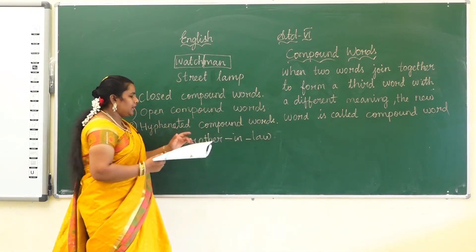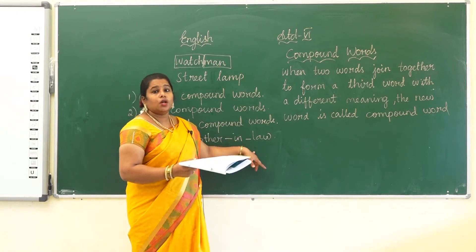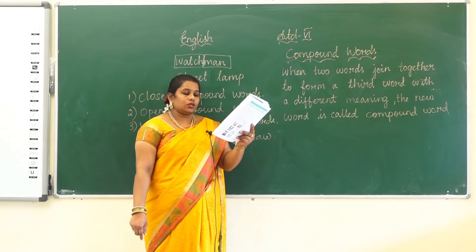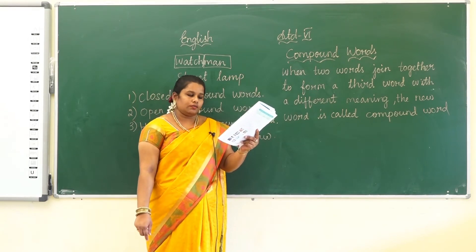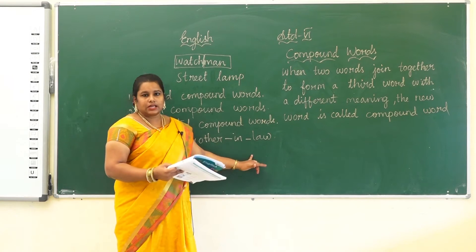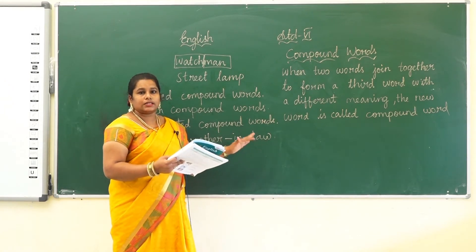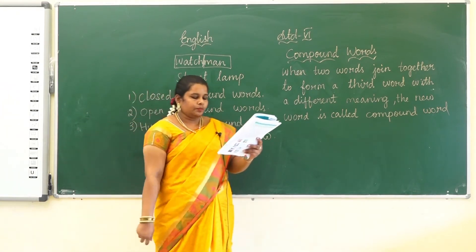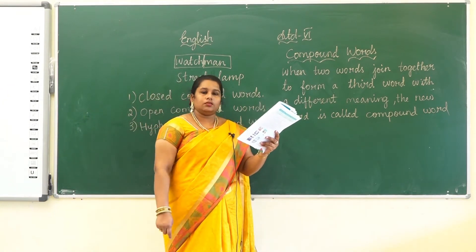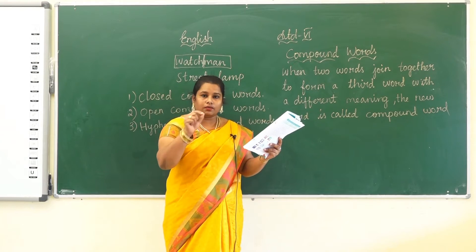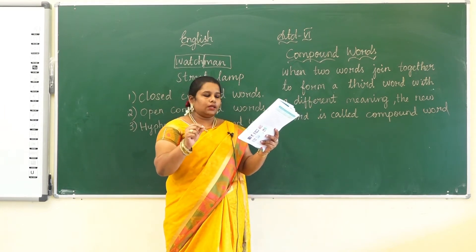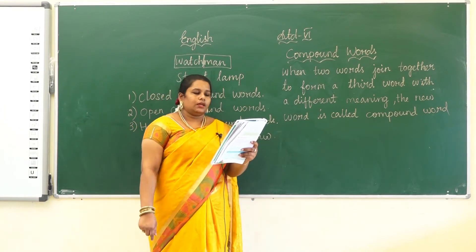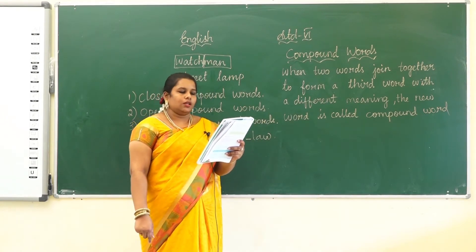Now, hyphenated compound words. Hyphenated means in between we want to put a hyphen symbol. For example: merry-go-round, brother-in-law, sister-in-law, daughter-in-law, son-in-law. These are hyphenated compound words. Next: two-third — between two and third we want to put a hyphen. Also: absent-minded and hand-picked.